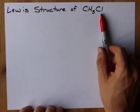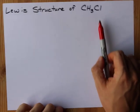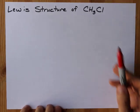Alright, the Lewis structure of CH3Cl, methyl chloride, chloromethane. Here we are, let's do it.